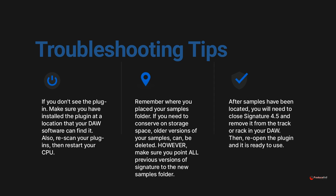After samples have been located, you will need to close Signature 4.5 and remove it from the track or rack in your DAW. Then, reopen the plugin and it is ready to use.